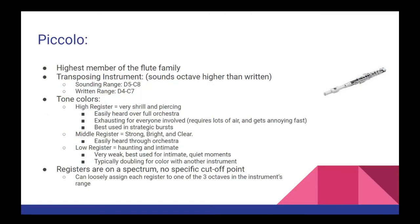The piccolo is the highest member of the flute family, with an incredibly high range of D5 to C8 — or the D an octave above middle C, all the way up to the C two octaves higher than high C. The piccolo is a transposing instrument, which means that the pitches the audience hears will not be the same notes that the players read. All that we need to know for now is that the piccolo is written an octave lower than what it sounds like.